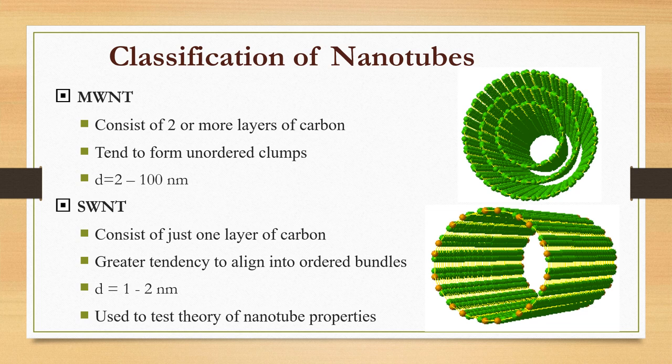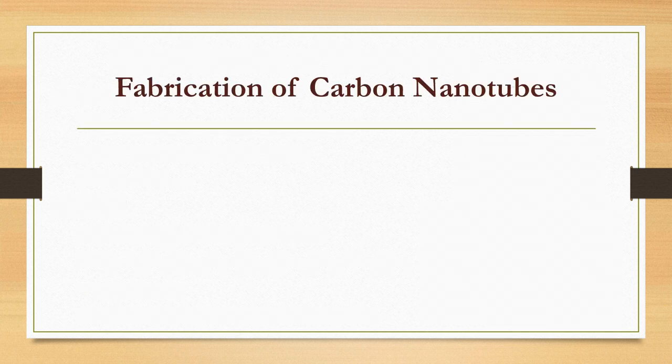The second type is single-walled nanotube. It consists of just one layer of carbon with greater tendency to align into ordered bundles, with tube diameter of 1 to 2 nanometers. These single-walled nanotubes are used to test the theory of nanotubes.